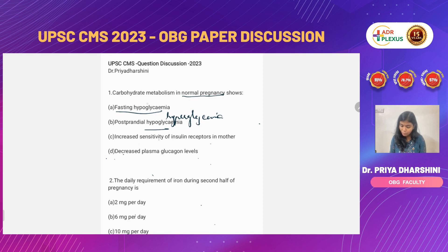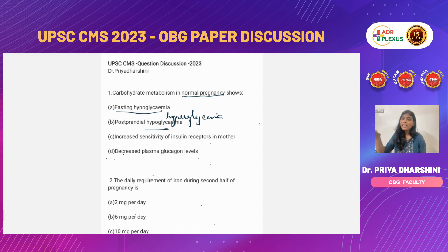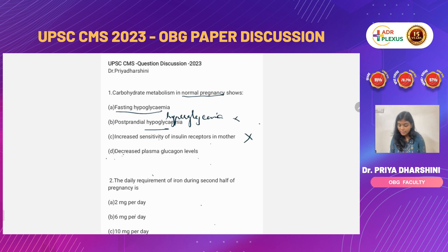We have to select the right response. The next option says there is increased sensitivity to insulin receptors — that is wrong. There is increased resistance to insulin; the sensitivity is decreasing and only the resistance is increasing. So that option is wrong. Then there is decreased plasma glucagon — that is also wrong, as glucagon is only increasing.